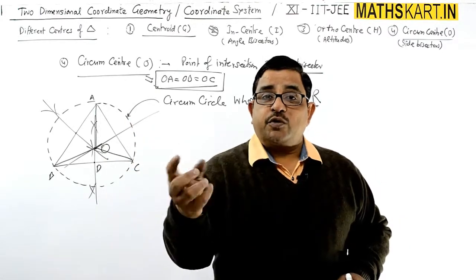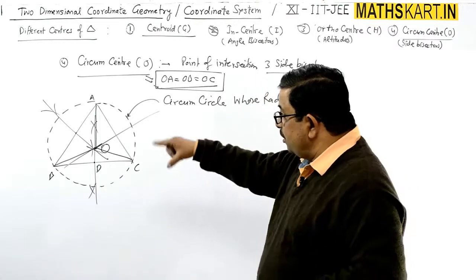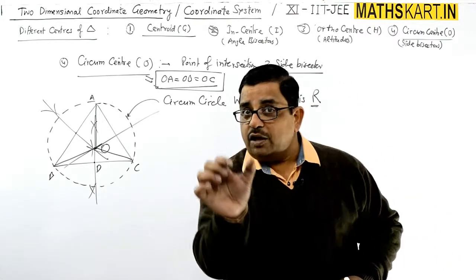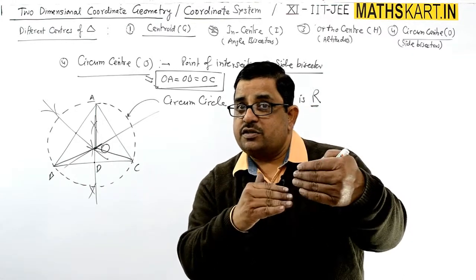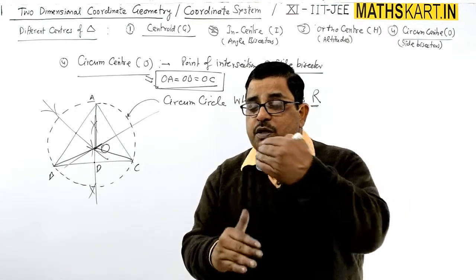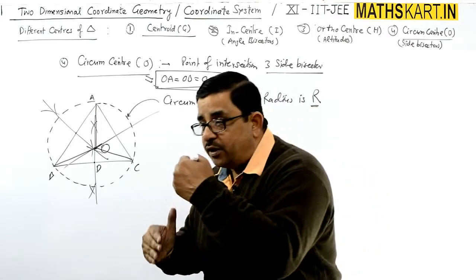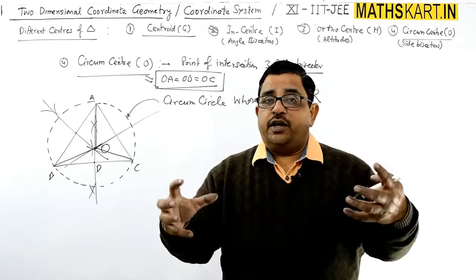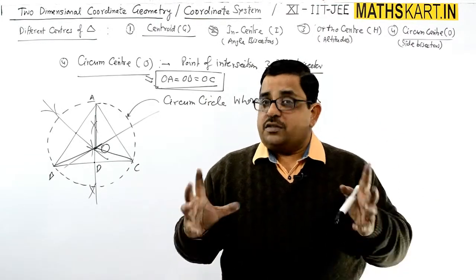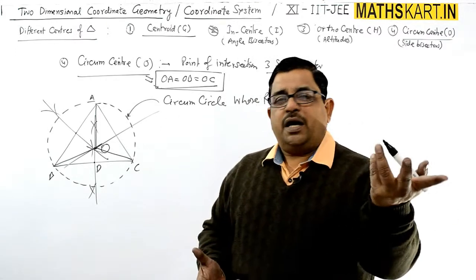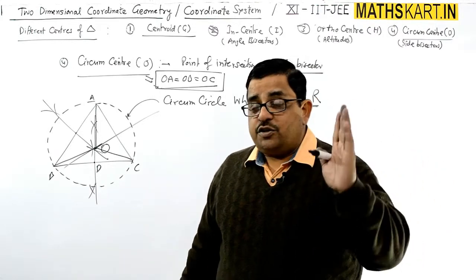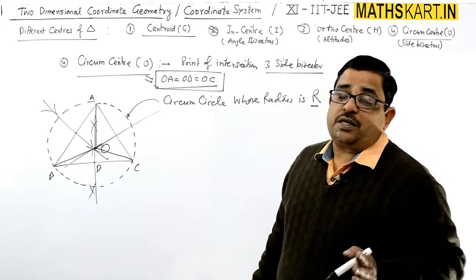Now what is the use of this? It is never used anywhere because for knowing this you have to know all three angles ABC and double of the angle value. Then you should know sin 2A, sin 2B, sin 2C. Then only you will be able to find out the circumcenter. In the theoretical concept you can remember the formula, but I do not think that it is used to find out the circumcenter.